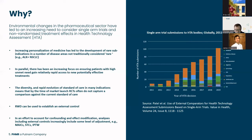In an effort to account for confounding and effect modification, analyses including external controls are increasingly including some level of adjustment. When external controls are based on historical trials, only aggregate data is available, so methods suitable in this setting are typically matching-adjusted indirect comparisons or simulated treatment comparisons in HTA. When IPD data is available, more common analytical methods such as regression adjustment and inverse probability of treatment weighting can be used.